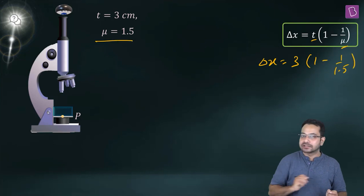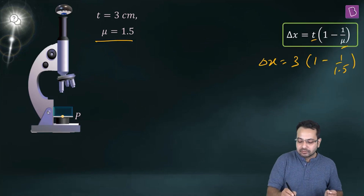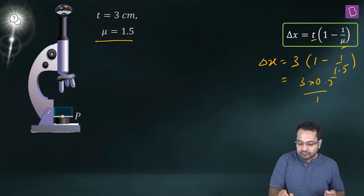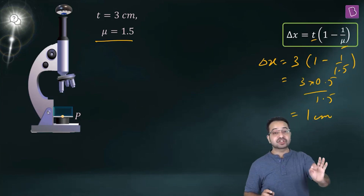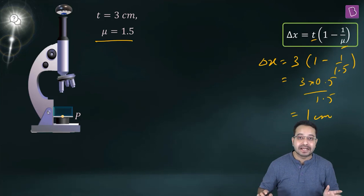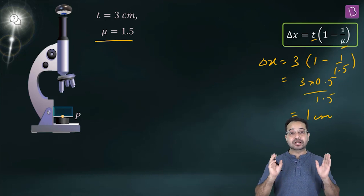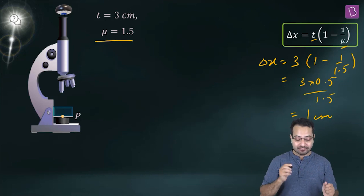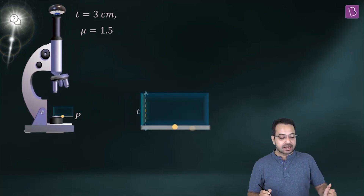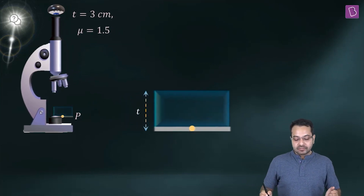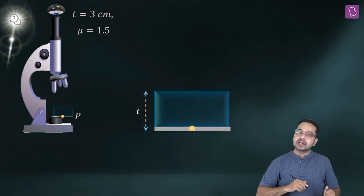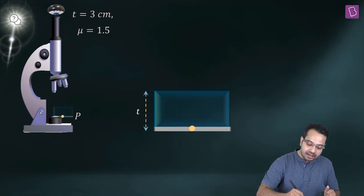All the data is here. This becomes 3 × 0.5/1.5, so delta x equals one centimeter. The shift is one centimeter. But the critical question is: what is the direction of the shift? Here is the object — now what is the direction of incident light? This is the direction of incident light.